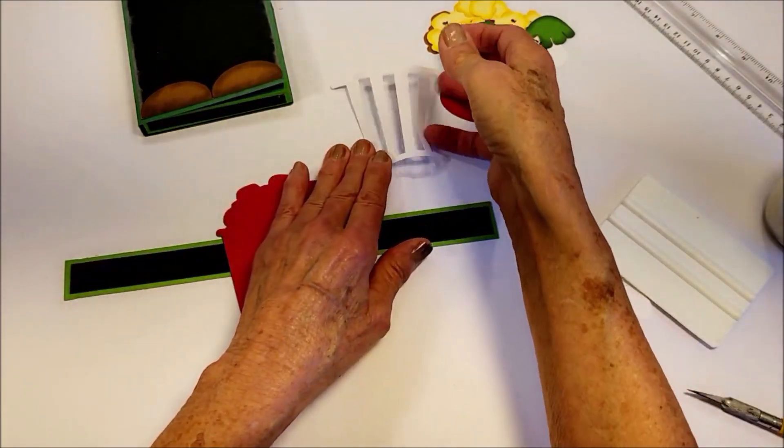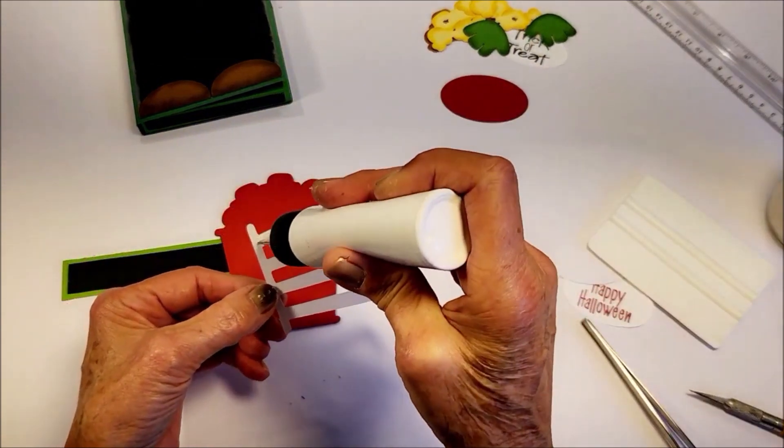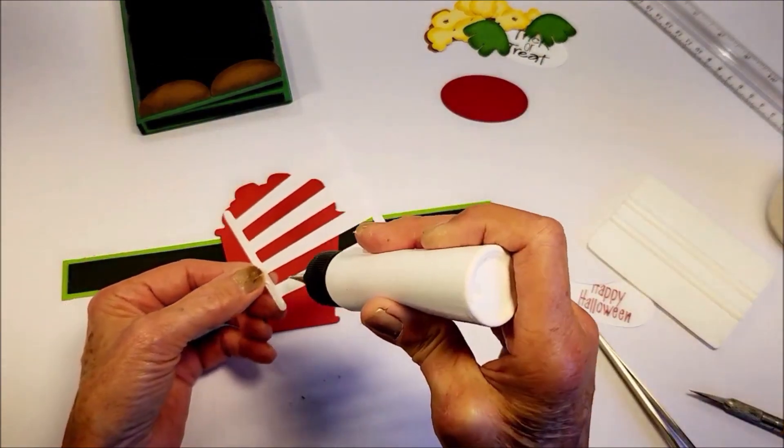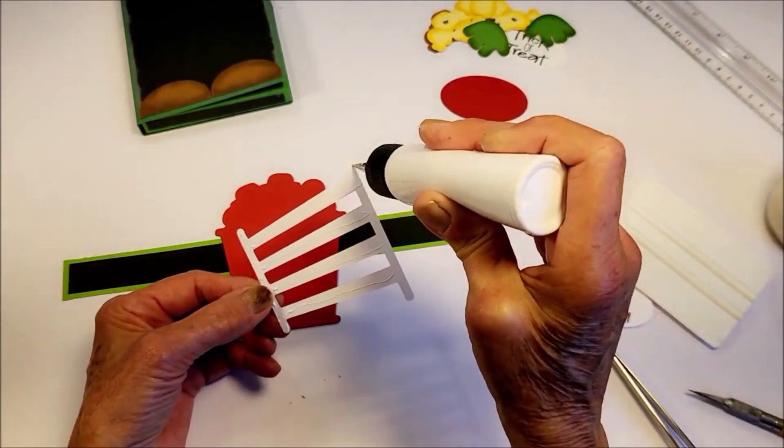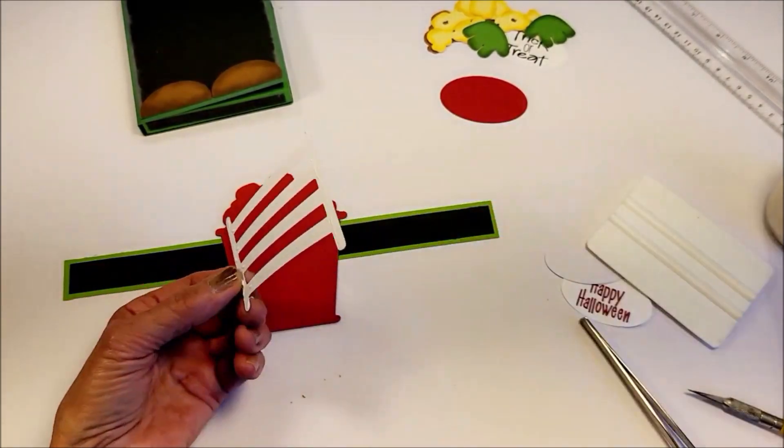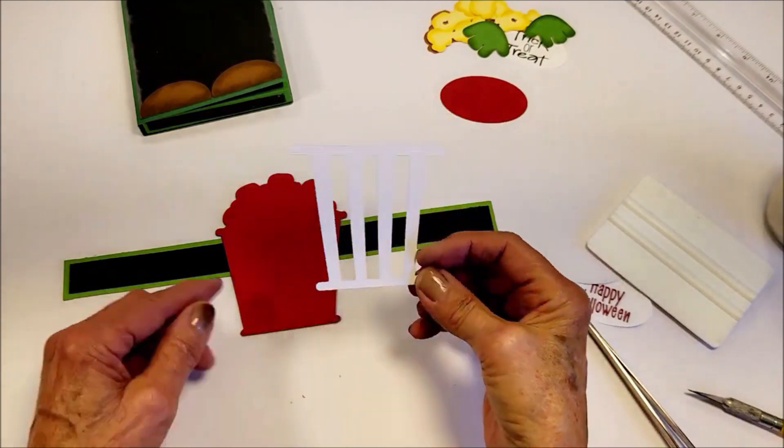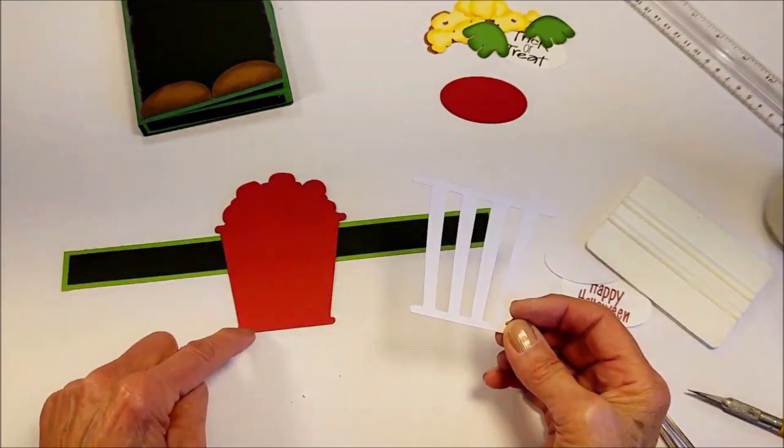And now we'll add the white stripes for the popcorn box. This I'm going to line up with these two notches here and then down at the bottom.